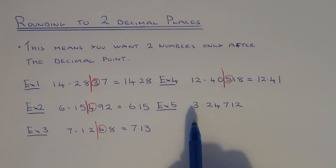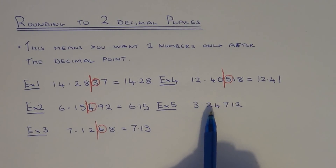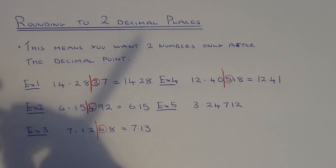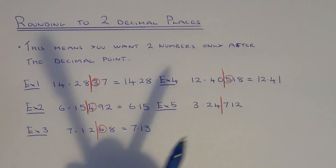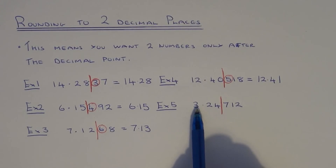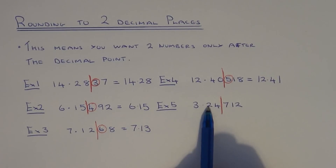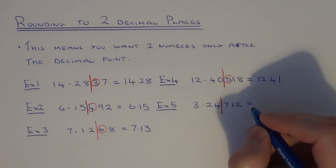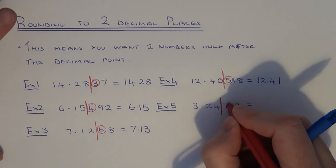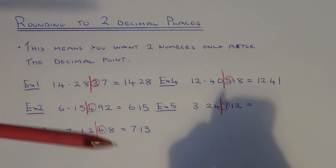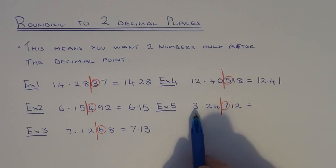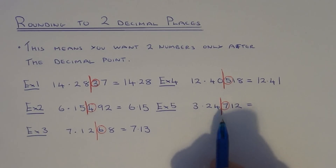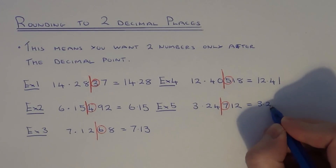One final example: this time we're looking at 3.24712. We need two numbers after the decimal point. If we round the number down, it'll be 3.24; if we round the number up, it'll be 3.25. Just look at the number after the line — since it's a seven, that's five or above, so we round our decimal upwards, and it's closer to 3.25.